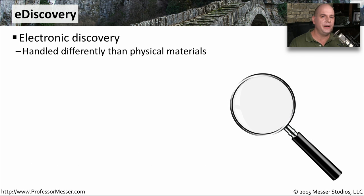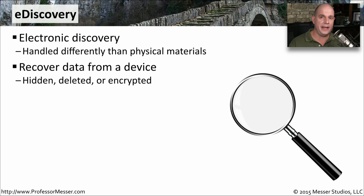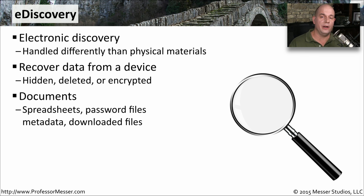Working with electronic data is very different than working with something that's physical. Very often, data stored on a drive may be hidden, or parts of information may be scattered in places that you don't see when you're normally browsing through files on a storage device. There's going to be a lot of work on recovering data from these devices. There may be hidden data or information that's been deleted that needs to be recovered, or the files may be encrypted and you need to work on decrypting the information. A lot of the focus is going to be on recovering documents — spreadsheets, word processing documents, password files, metadata, or anything else that might help you gather details about what was happening on that particular device.